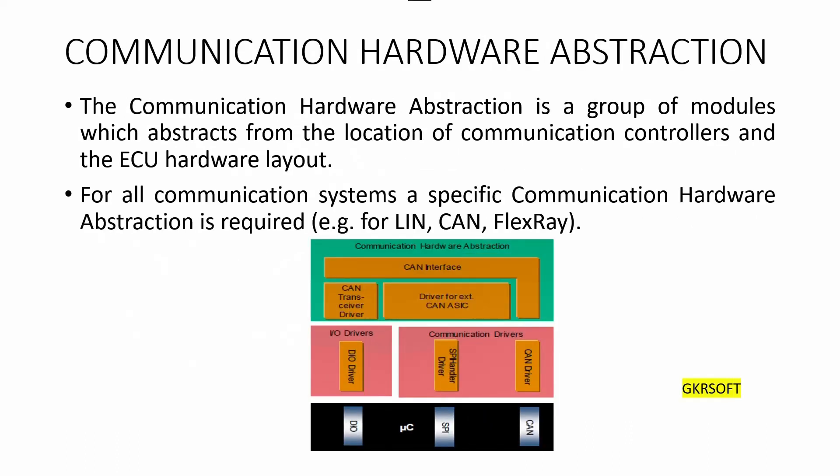Communication hardware abstraction is a group of modules which abstracts from the location of communication controllers and ECU hardware layout. For all communication systems, a specific communication hardware abstraction is required — for example, LIN, CAN, FlexRay. As an example, an ECU has a microcontroller with two internal CAN channels and an additional onboard ASIC with four CAN controllers. The CAN ASIC is connected to the microcontroller via SPI (Serial Peripheral Interface). The communication drivers are accessed via bus-specific interfaces, for example the CAN interface. The task of the communication hardware abstraction layer is to provide an equal mechanism to access a bus channel regardless of its location — meaning on-chip or on-board.